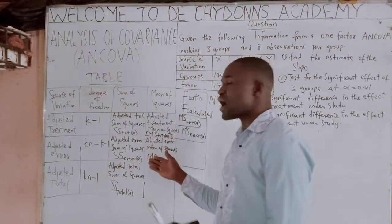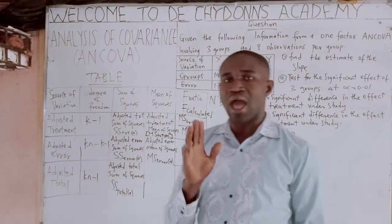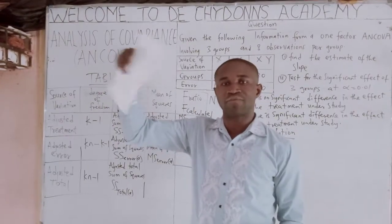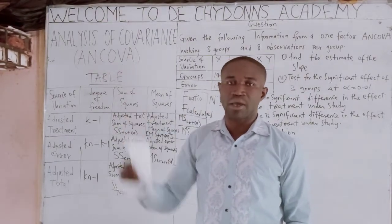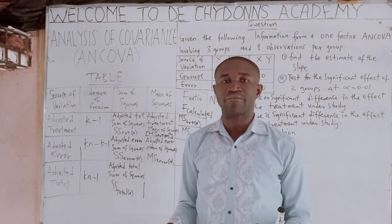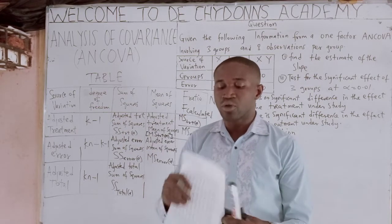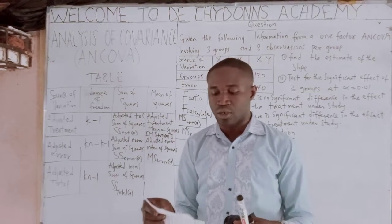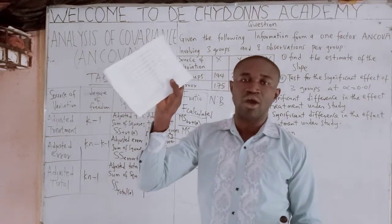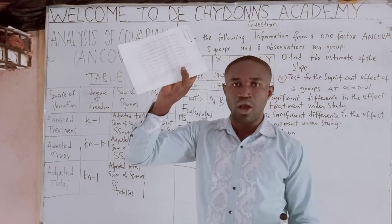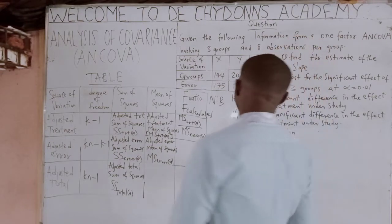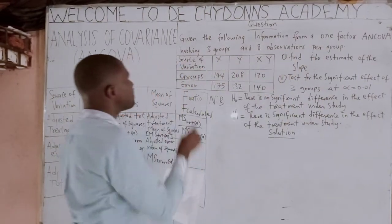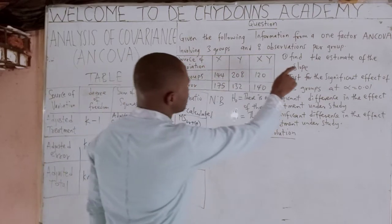This is a typical example of an ANCOVA table. Before you solve a question on ANCOVA and establish it using the table, you must have your F distribution table — the percentage points F distribution table. So when you get a typical table, you go into where they say 'percentage points F distribution.' That is where you will get your F table. Now let's solve the question: given the following information from a one-factor ANCOVA involving three groups and eight observations per group.